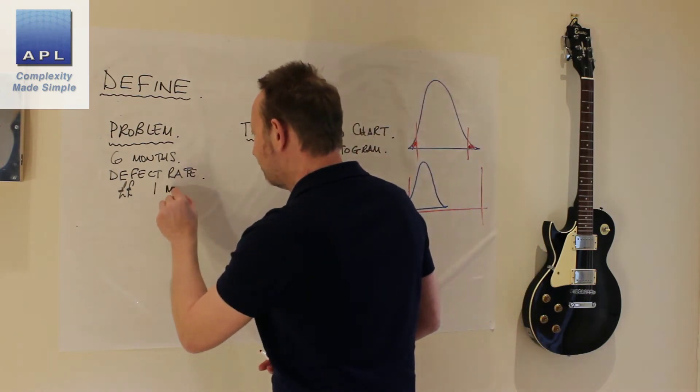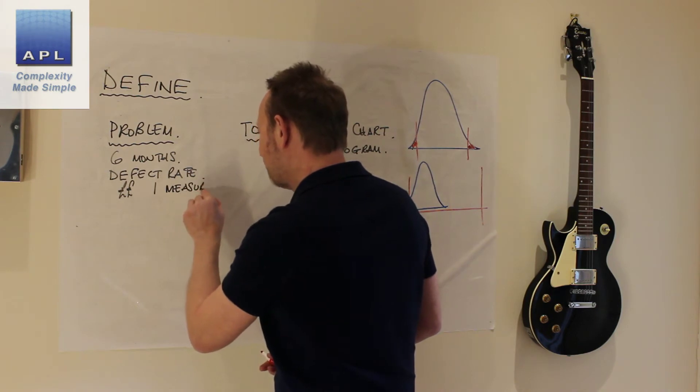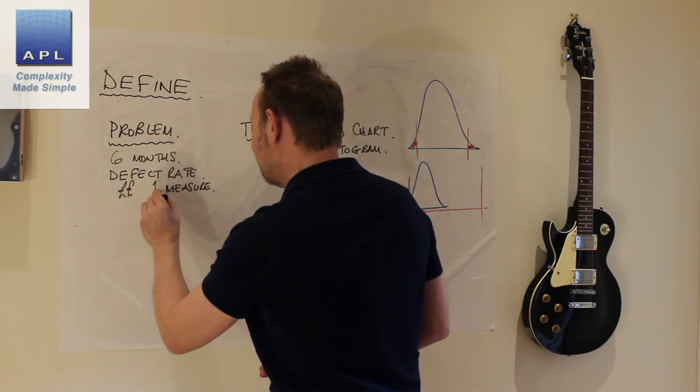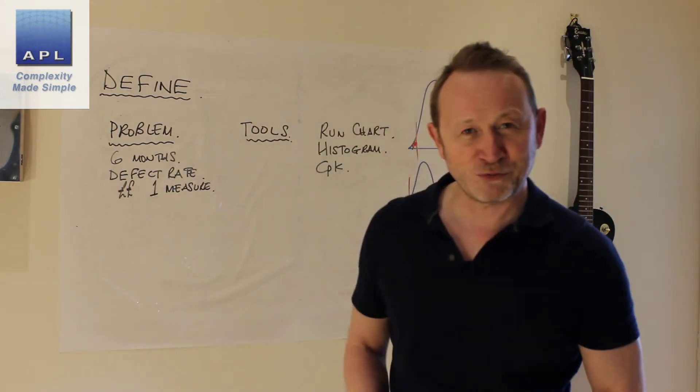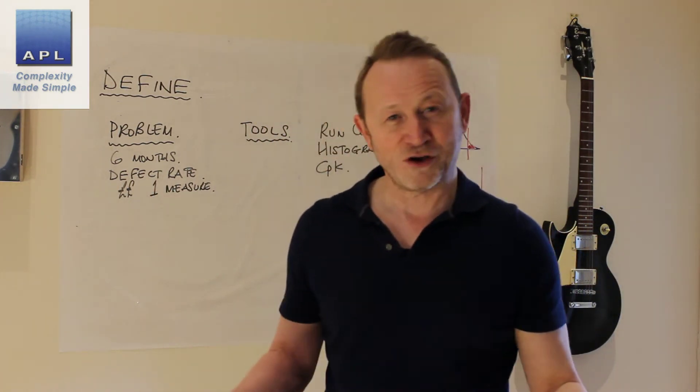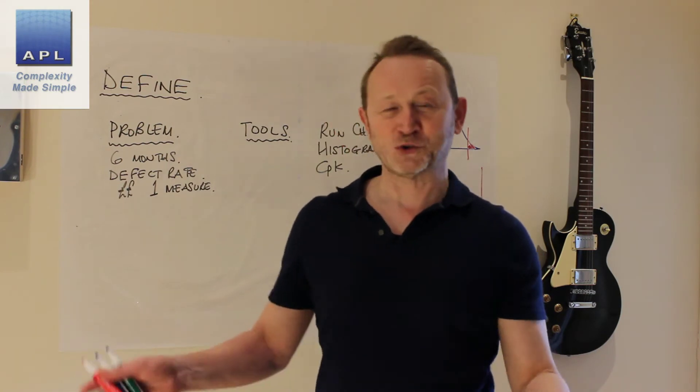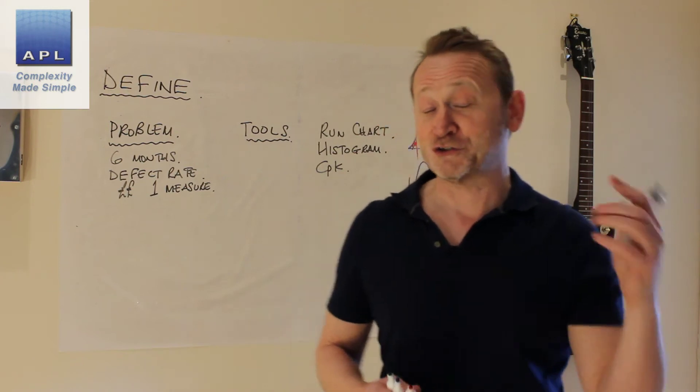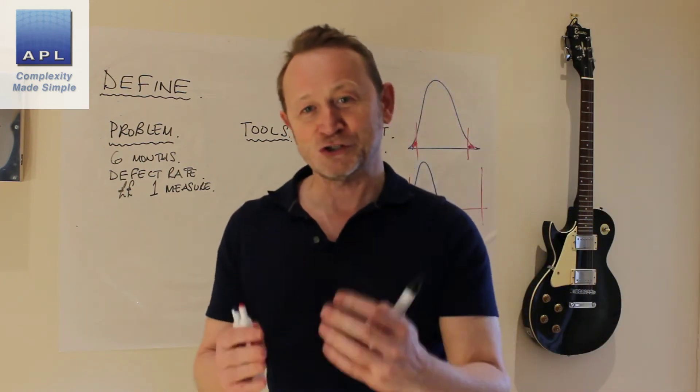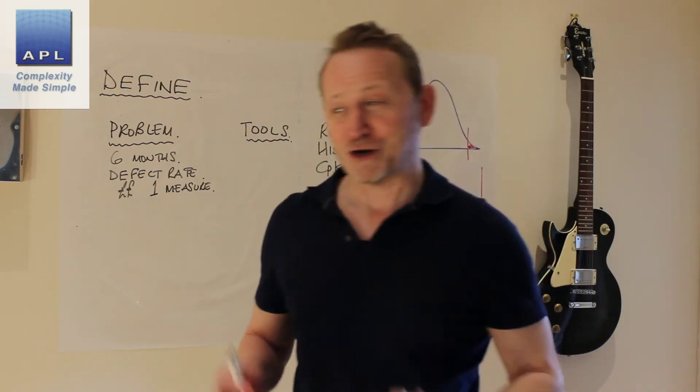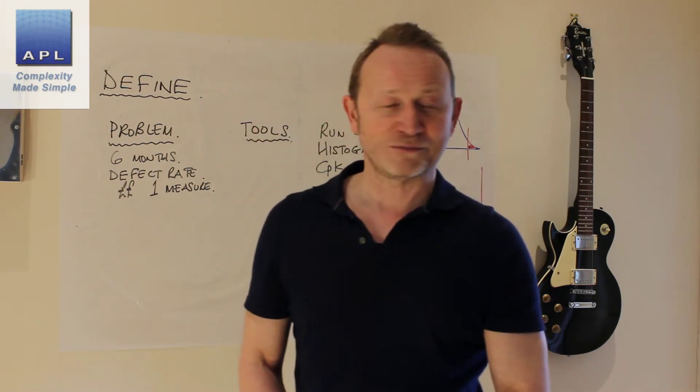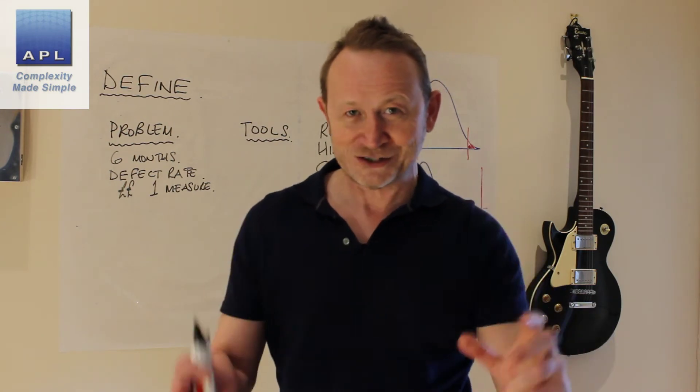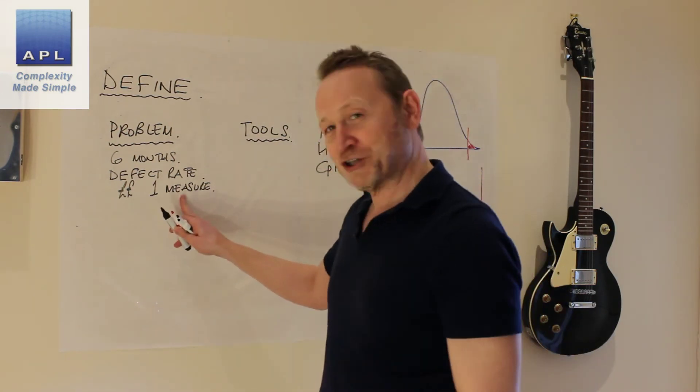And the other thing about the problem, defining the problem, you want to have one measure. So sometimes people want to say, oh I've got an OEE problem, I've got a defect rate problem, and I've got an on-time delivery problem. I want to fix all of those. Now the problem is, you decide you're trying to improve the OEE, you decide you're trying to improve the defect rate, you decide you're trying to improve the on-time-in-full. Pick one and keep it clear and simple. One measure of success only in the problem statement.